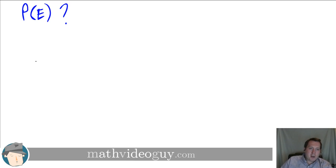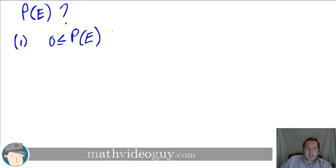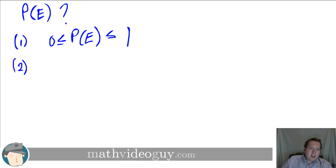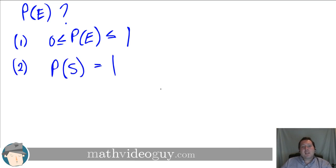What does P(E) mean? Let's talk about what rules probabilities follow. The first rule is that probabilities are always positive — for any event, you're going to have a probability between 0 and 1. You can't have a probability of 200%; a 200% likelihood is no different than 100%.